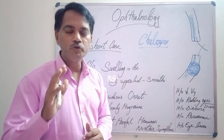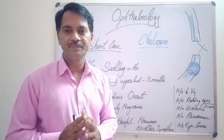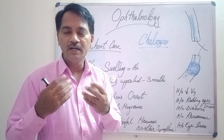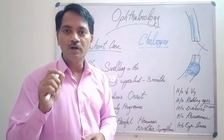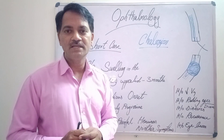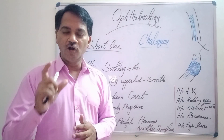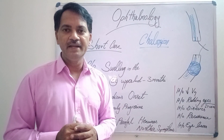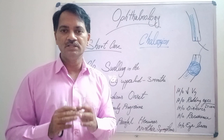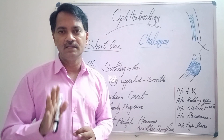The definition of chalazion is: a chronic lipogranulomatous inflammation of the meibomian gland. The etiological factors leading to a chalazion are similar to the etiologies for hordeolum externum and internum.